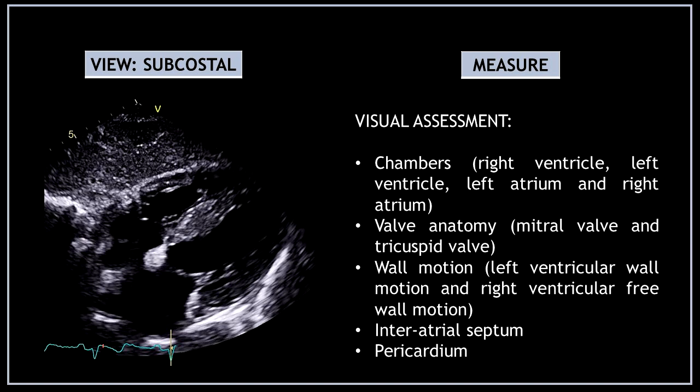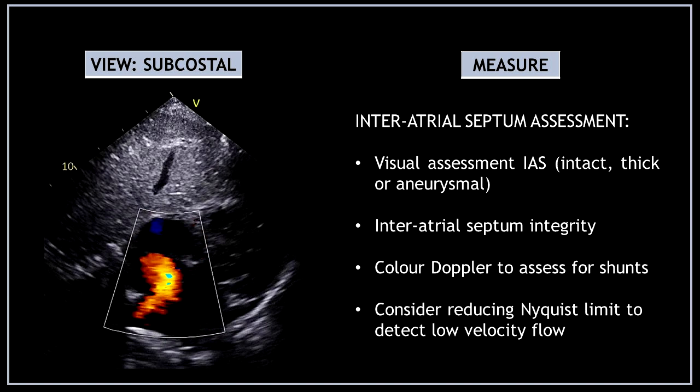Have a look at the inter-atrial septum and the pericardium. For the inter-atrial septum assessment, visually assess it and report if the septum appears intact, thick, or aneurysmal. Use color Doppler to check the inter-atrial septum integrity and to assess for shunts, and consider reducing the Nyquist limit to detect low velocity flow.